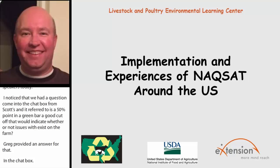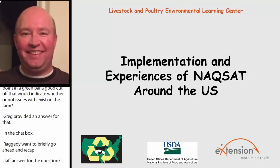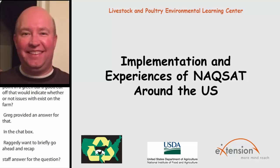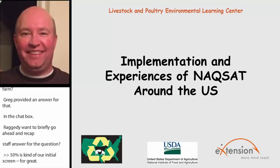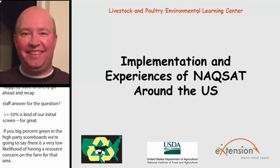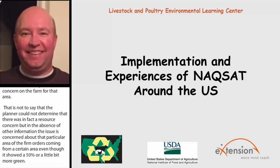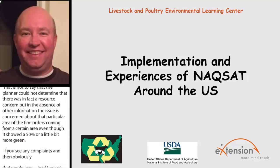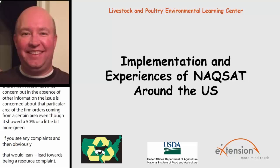50% is kind of our initial screen. If you've got at least 50% green in those high priority score bars, we're going to say there's a very low likelihood of actually having a resource concern on that farm for that area. That's not to say the planner couldn't determine there was a resource concern there, but in the absence of other information — for example, if the producer was concerned about odors from a certain area and getting complaints, even with 50% or a bit more green — that would lean toward being a resource concern. But generally, just using NACSAT, a 50% green score bar is a good indication you're not likely to have a resource concern.